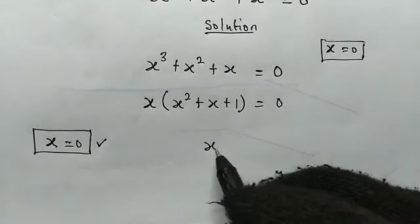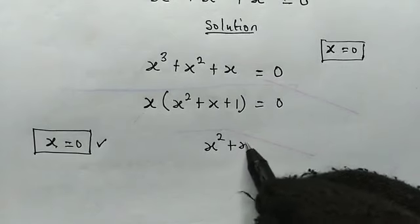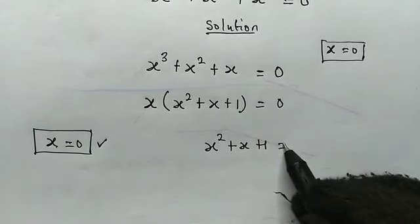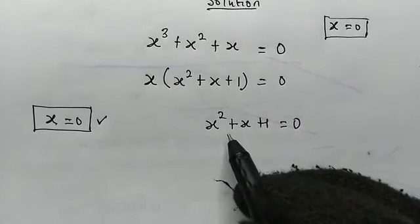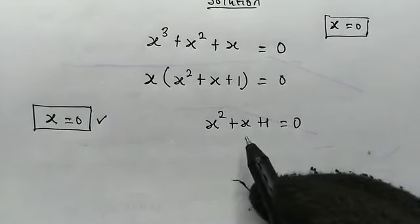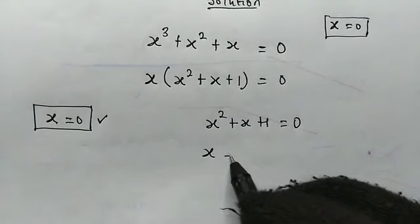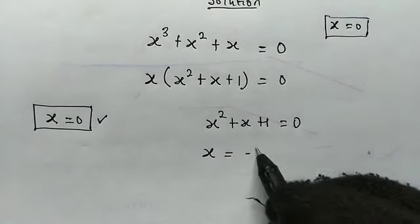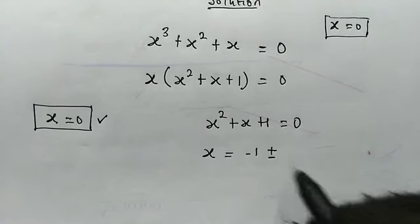Or the bracket x squared plus x plus 1 is equal to 0. So from here, we're going to make use of the general quadratic formula. So here we get x is equal to negative b, in this case will be negative 1, plus or minus,